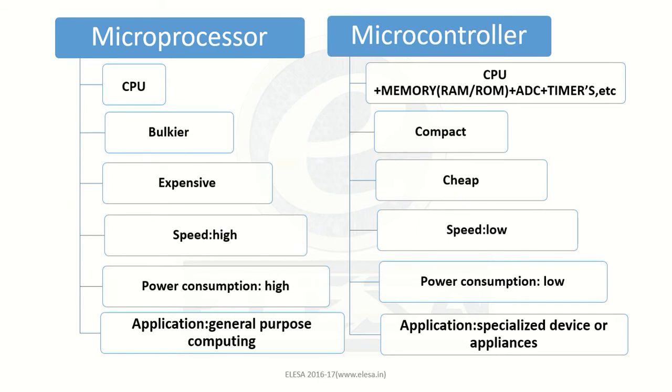You might also have heard the term microprocessor. What is the basic difference between microcontroller and microprocessor? A microprocessor consists only of the CPU, whereas a microcontroller has CPU plus extra devices like memory, ADCs (analog to digital converters), timers and much more.